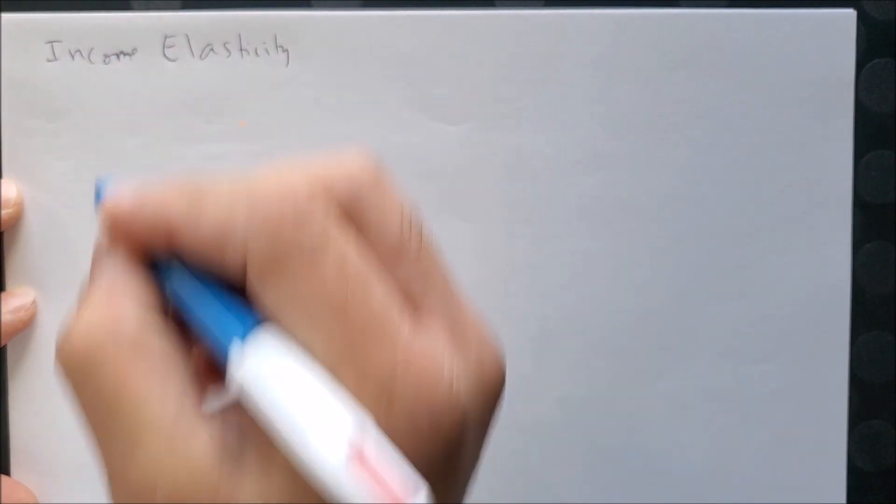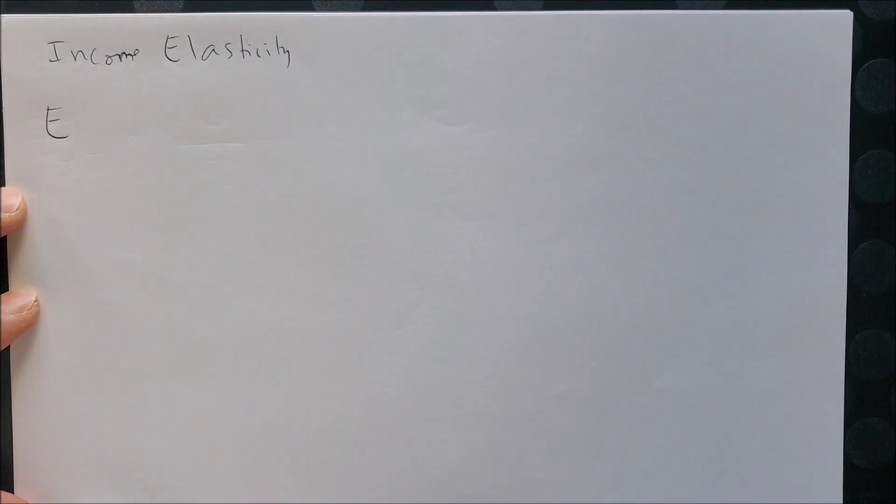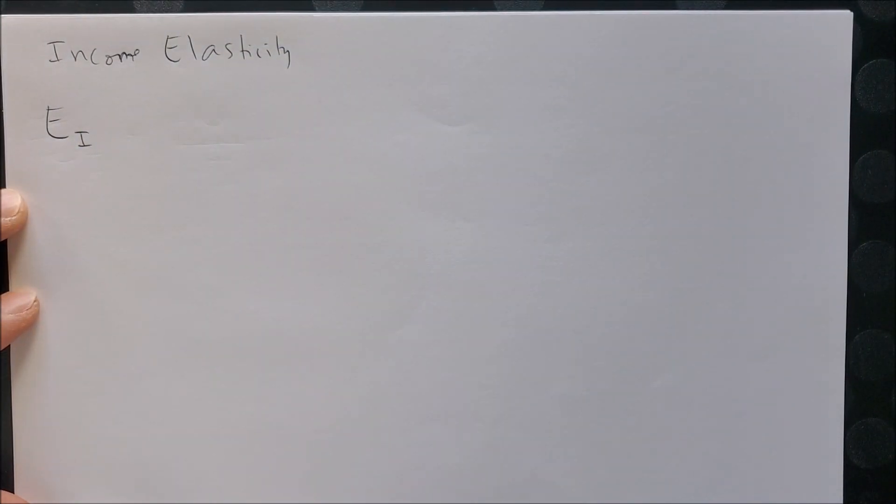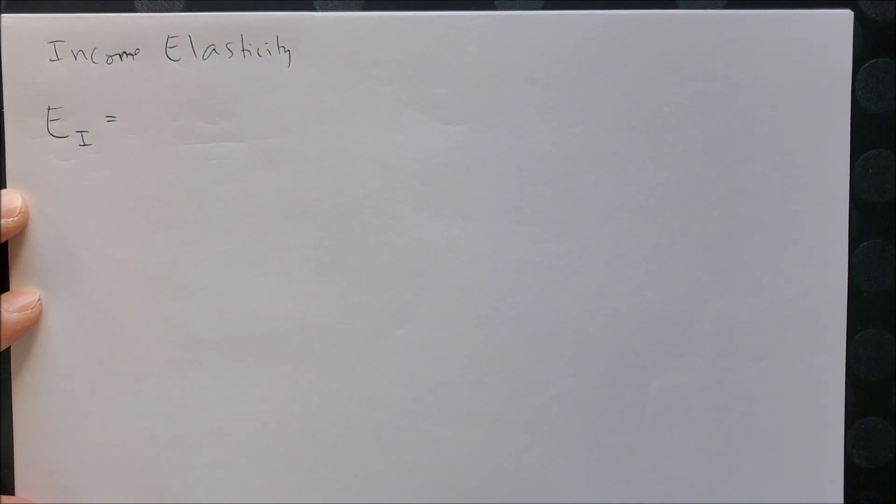And like the equation we looked at for price elasticity, we know that we have big E for elasticity. And instead of lowercase p sub p, we're going to have sub i for income elasticity. And from here we can then go further and look at what two factors are going to determine our income elasticity.